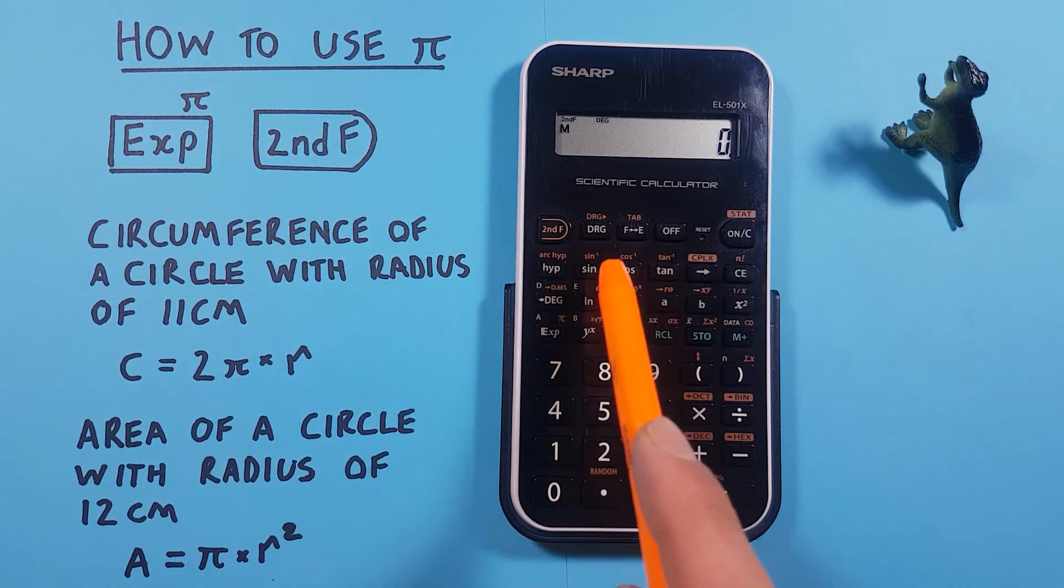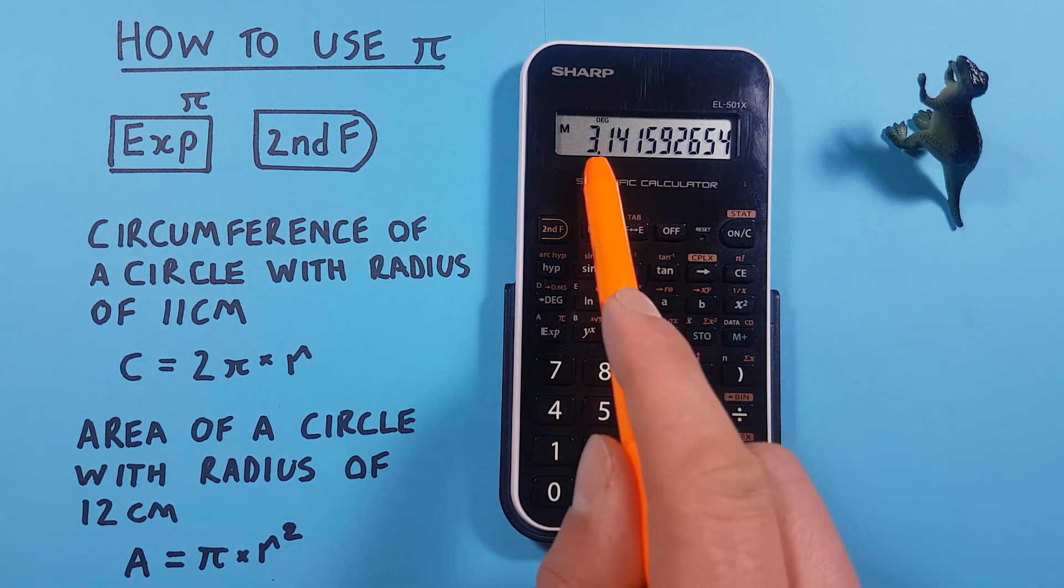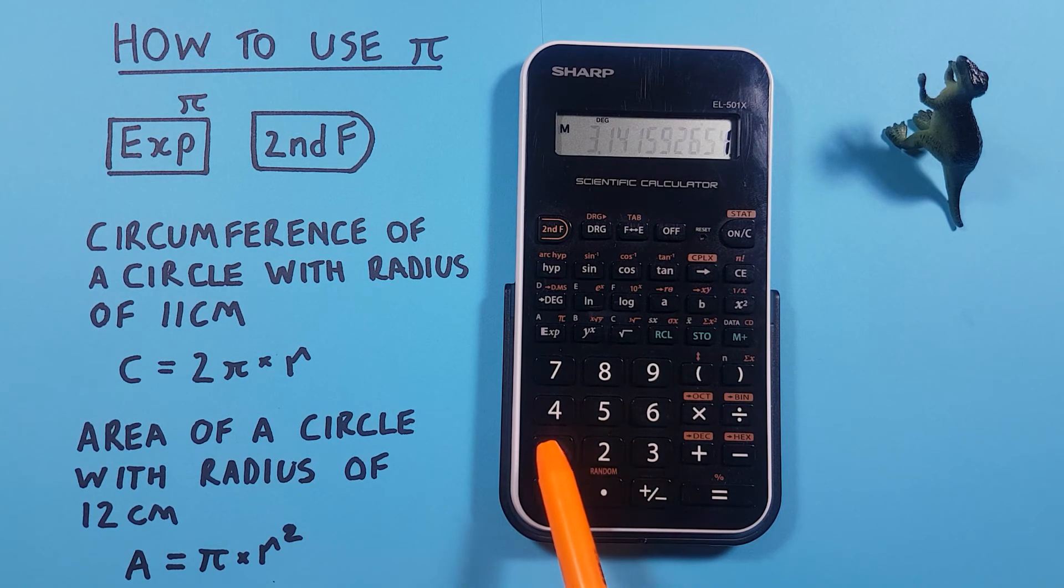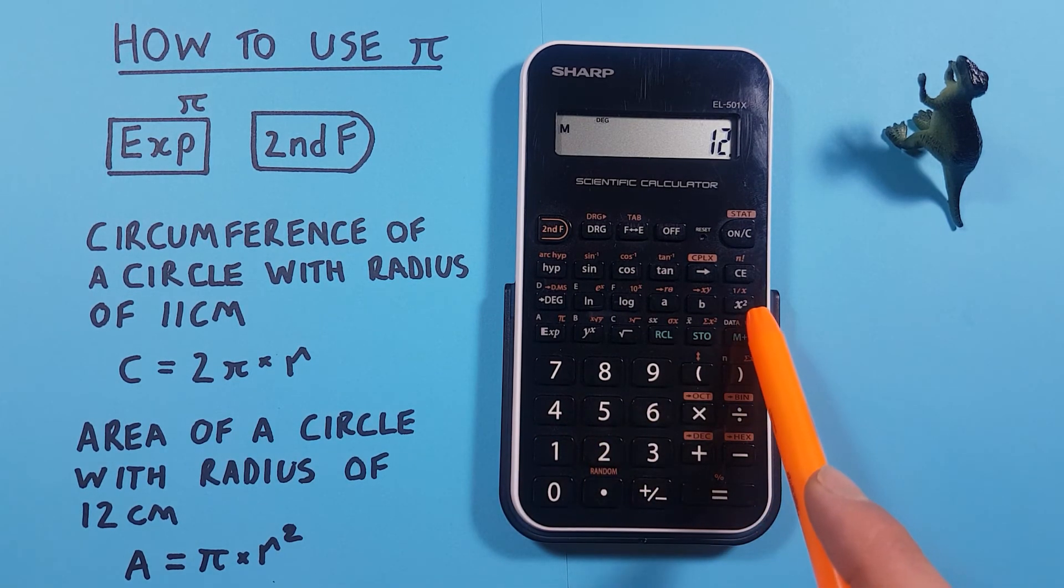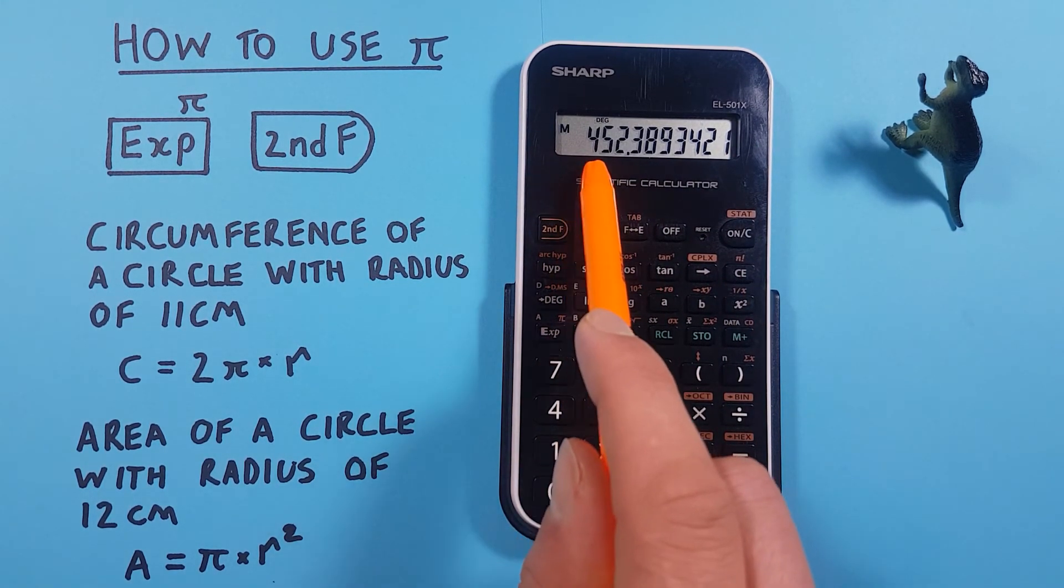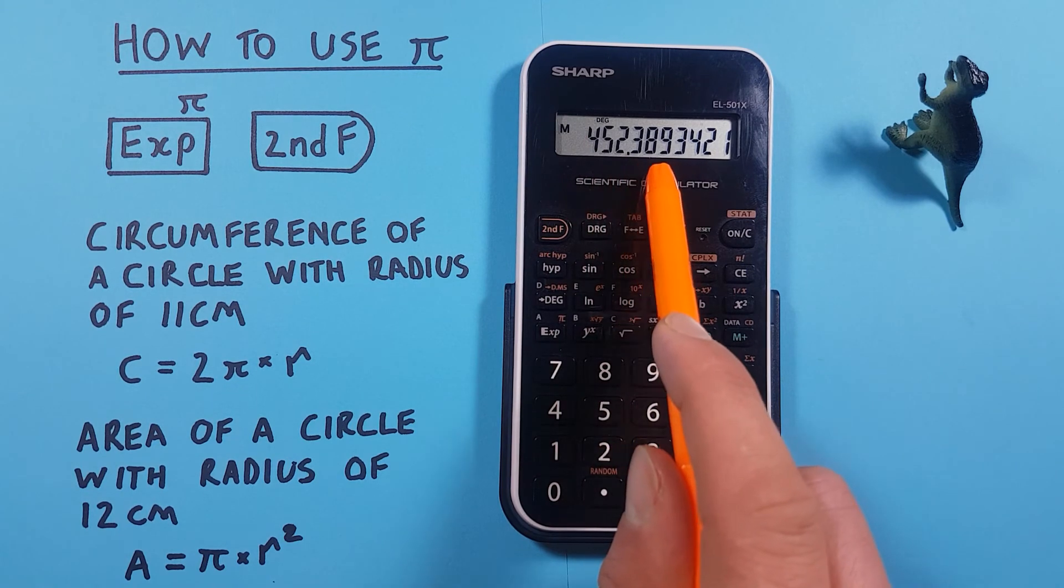So we start with our PI, second exp key, there's our number PI, times our radius which was 12, and then square that with the x squared key. Then hit equals and this gives us a result of 452.389.